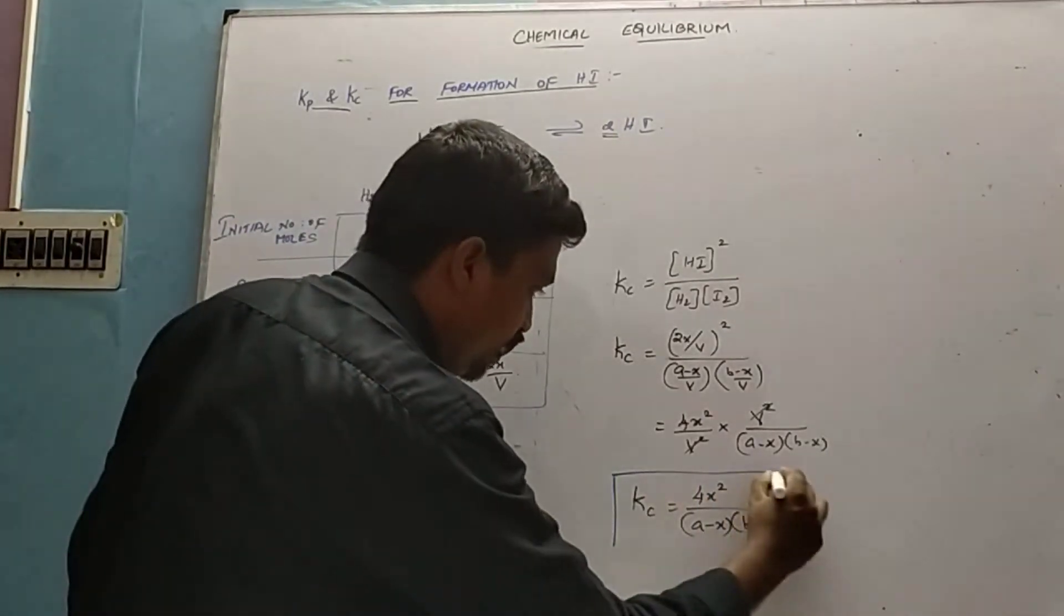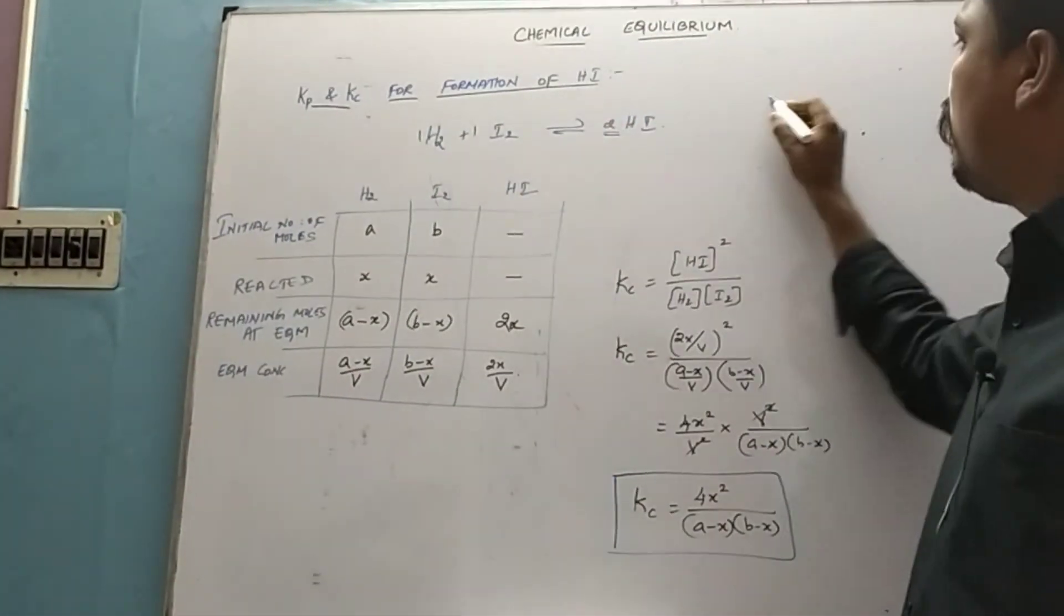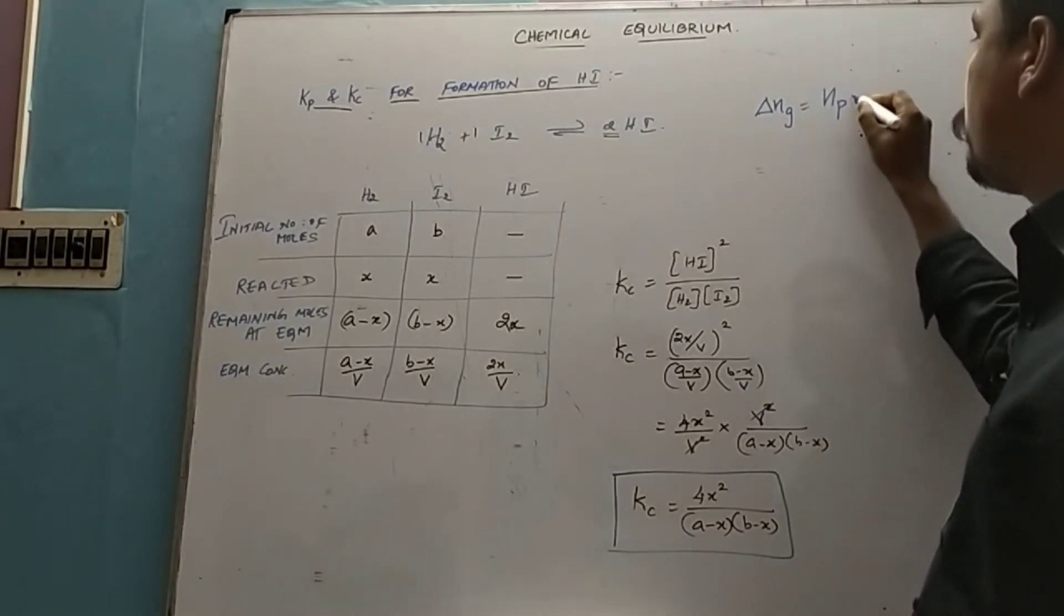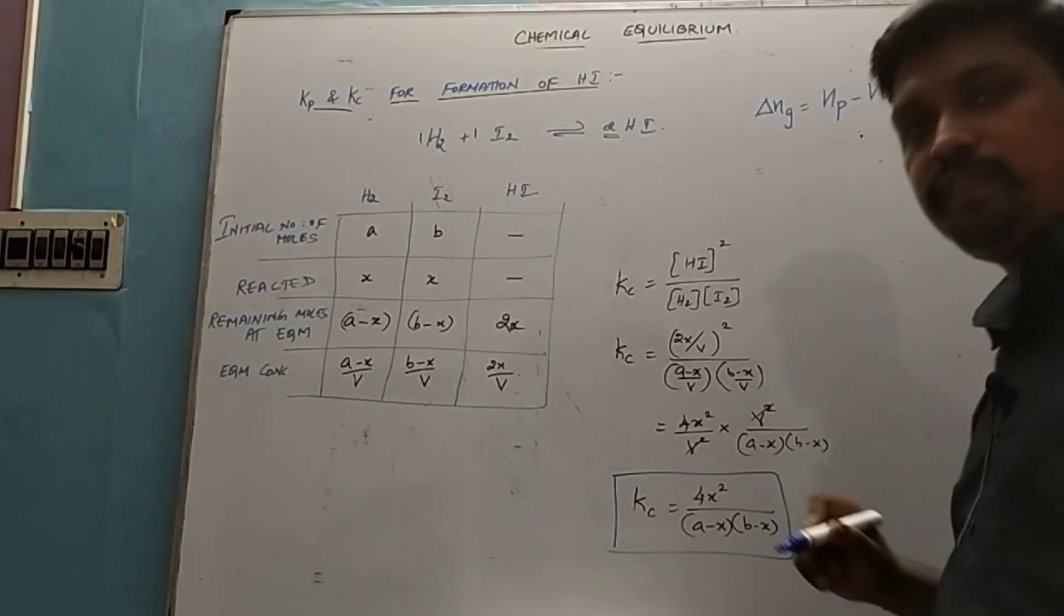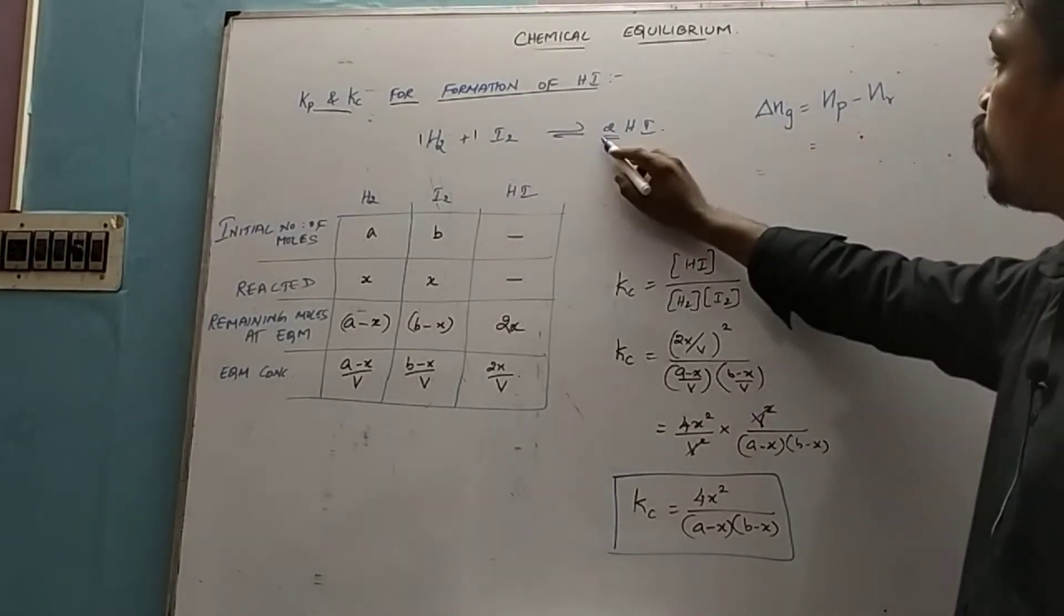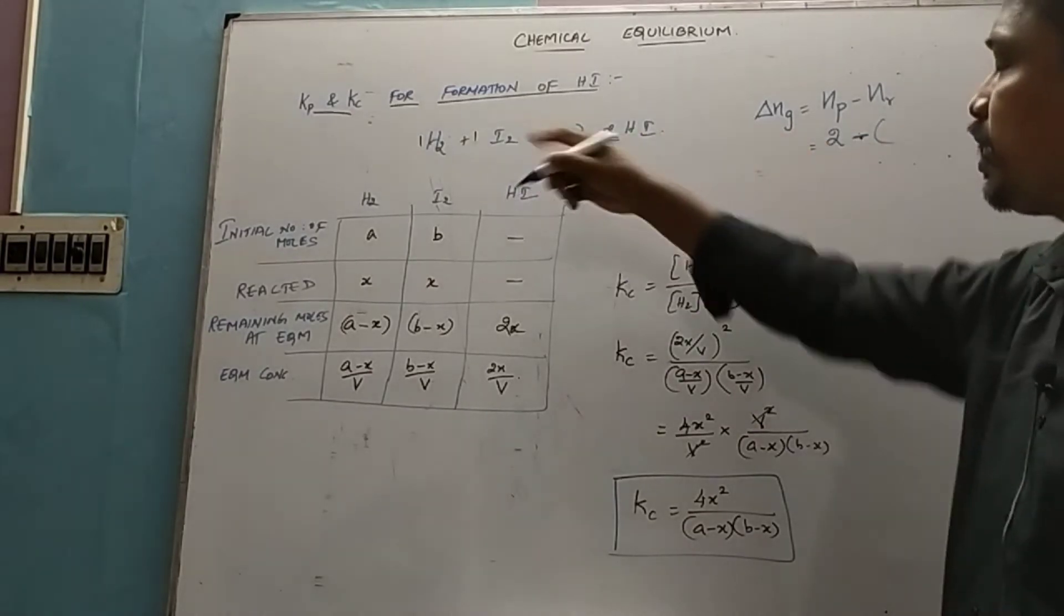Now we derive the value for Kp. First see what is the value of Δng. Δng means number of moles of products minus number of moles of reactants. Number of moles of products is 2 minus number of moles of reactants, which is one hydrogen plus one iodine, so 2 minus 2 equals zero.